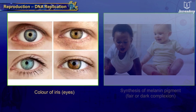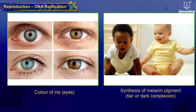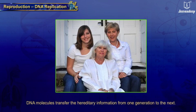For example, color of the iris, synthesis of melanin pigment, and fair or dark complexion are some examples of traits controlled by genes. These DNA molecules transfer the hereditary information from one generation to the next.